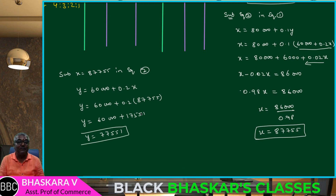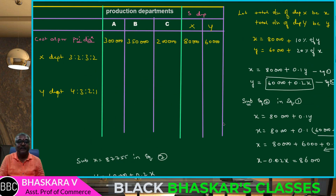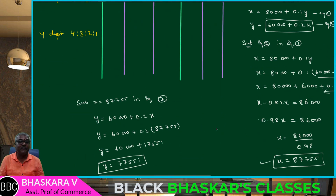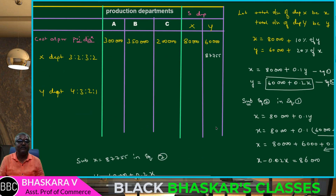So y value is 77,551 and x value is 87,755. Now we have both values: x equals 87,755 and y equals 77,551.